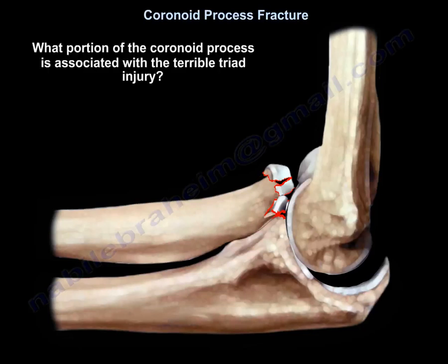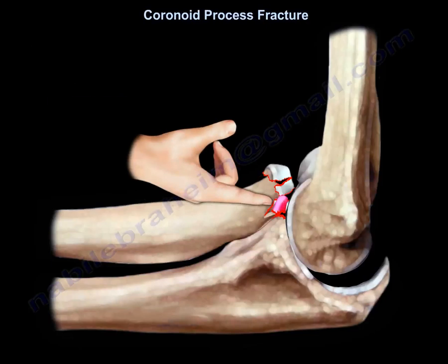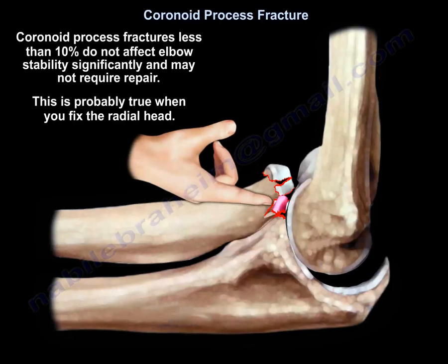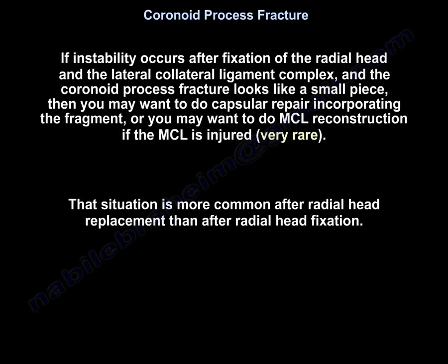What portion of the coronoid process is associated with terrible triad? The coronoid process tip. Coronoid process fractures less than 10% don't affect elbow stability significantly and may not require repair — that is probably true when you fix the radial head. If instability occurs after fixation of the radial head and the lateral collateral ligament complex and the coronoid process looks like a small piece, then you may want to do capsule repair incorporating the fragment, or MCL reconstruction if the MCL is injured, which is very rare.